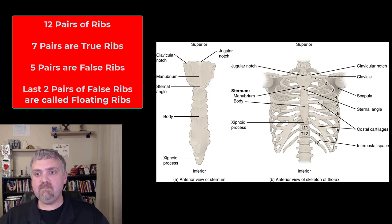So you have seven pairs of true ribs, five pairs of false ribs, two of which are floating. Don't add them all up and think there's 14 pairs of ribs. The last two are also known as floating ribs because they don't attach in the front. Their job is to protect the kidneys in the back.